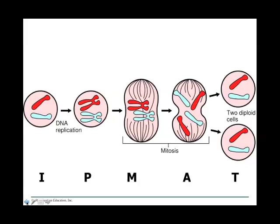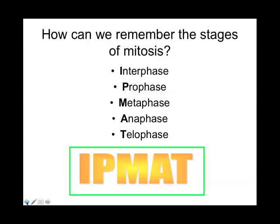If you make some kind of mnemonic — something like P-M-A-T: 'poor men are testing' — or any other thing that will help you remember the sequence, because you have to know the sequence. It's on the test. The picture is showing all the events of mitosis that we just went through so you can see the two diploid cells, which means there are two copies of every chromosome. Try to come up with something to remember I-P-M-A-T.